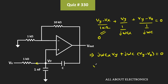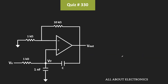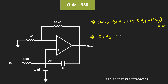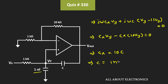So writing the remaining terms: jωCx times Vy plus jωC times (Vy minus Vout) equals 0. Substituting the value of Vout, we get jωCx times Vy plus jωC times (Vy minus 11·Vy) equals 0. Or we can say that Cx times Vy minus C times 10 times Vy equals 0. That gives us Cx equal to 10 times C. Since the value of Cx is 1 nanofarad, C equals 1 nanofarad divided by 10, which is 0.1 nanofarad or 100 pF.